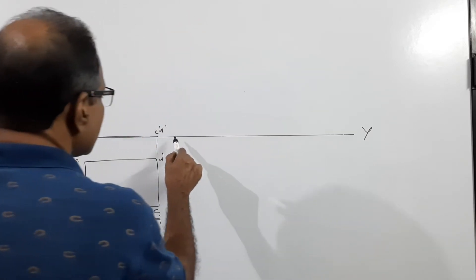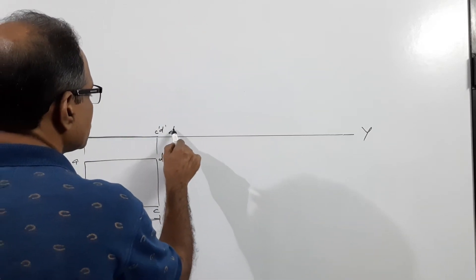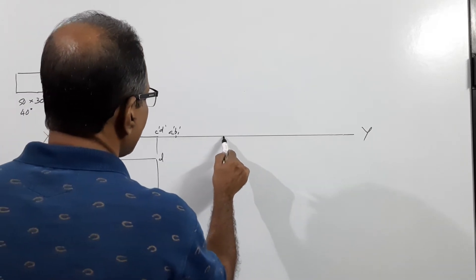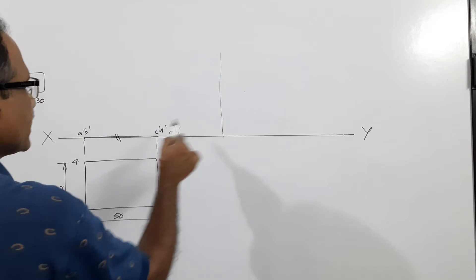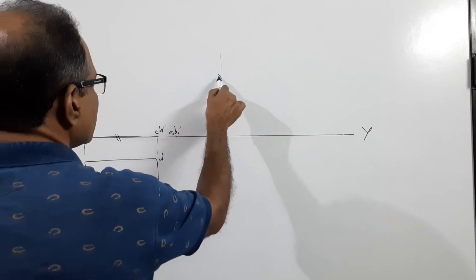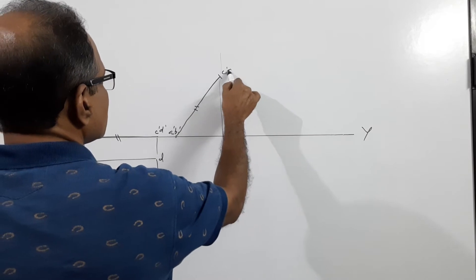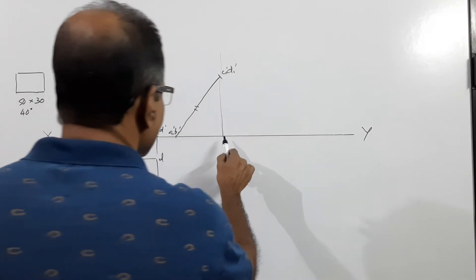Now take A1 dash B1 dash anywhere on HP, measure 30 mm away and draw a projector. Take this elevation length and cut it.